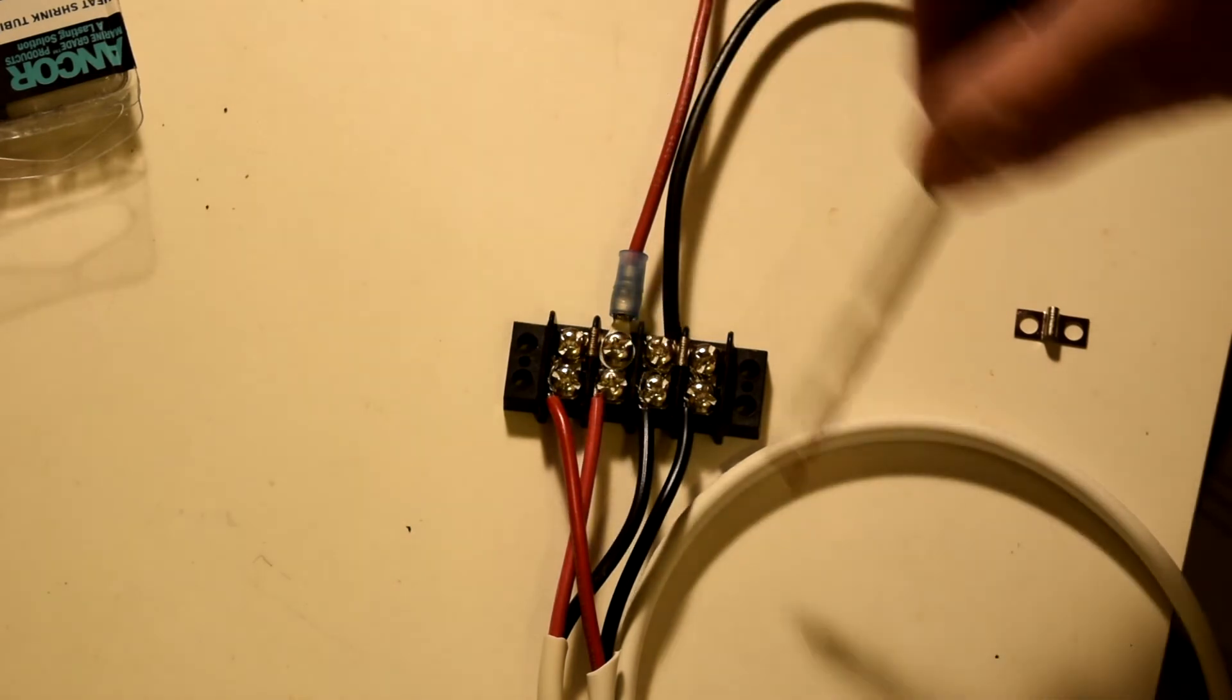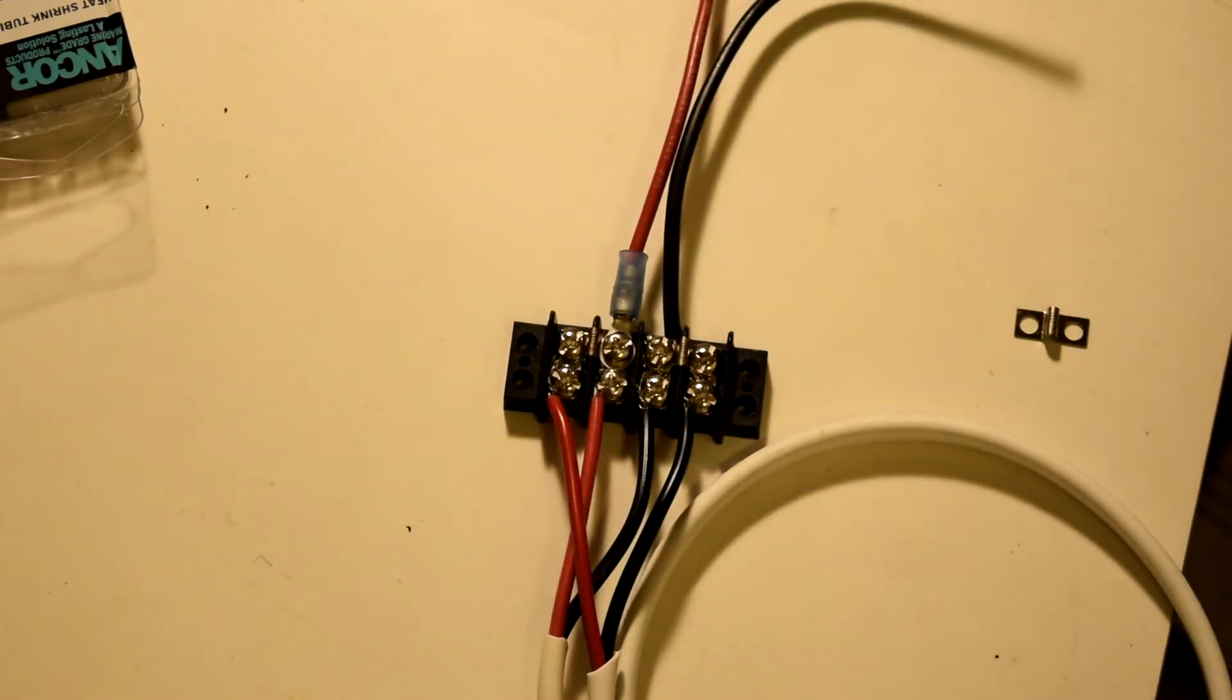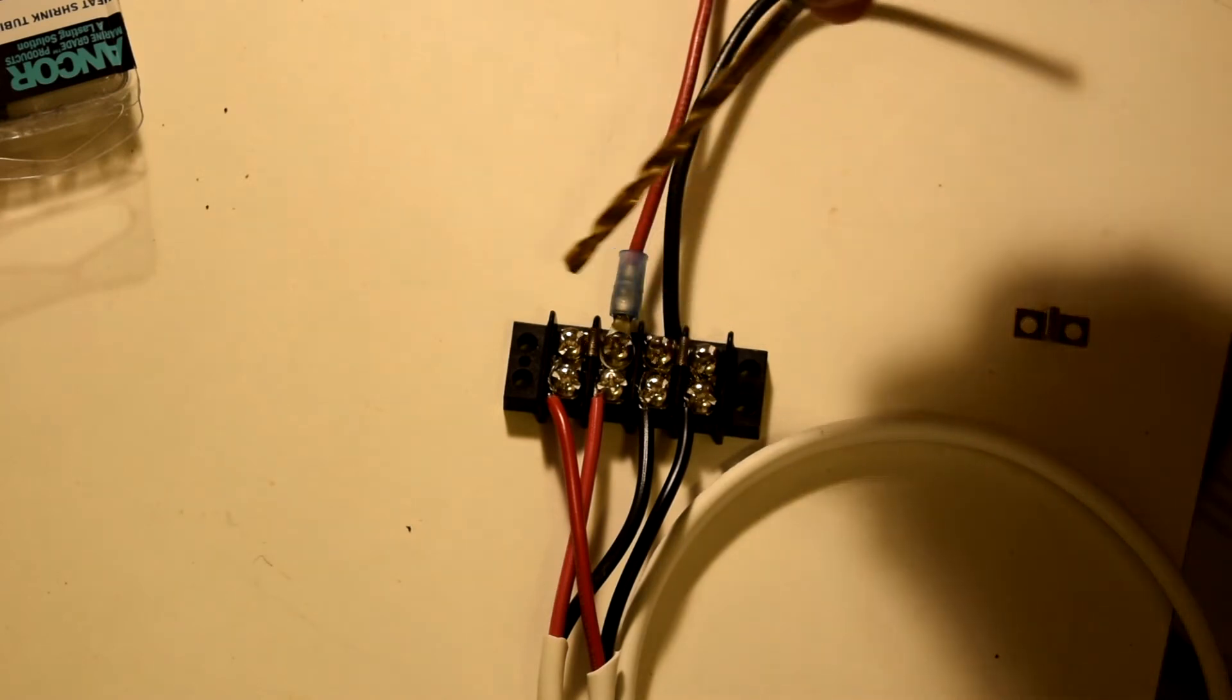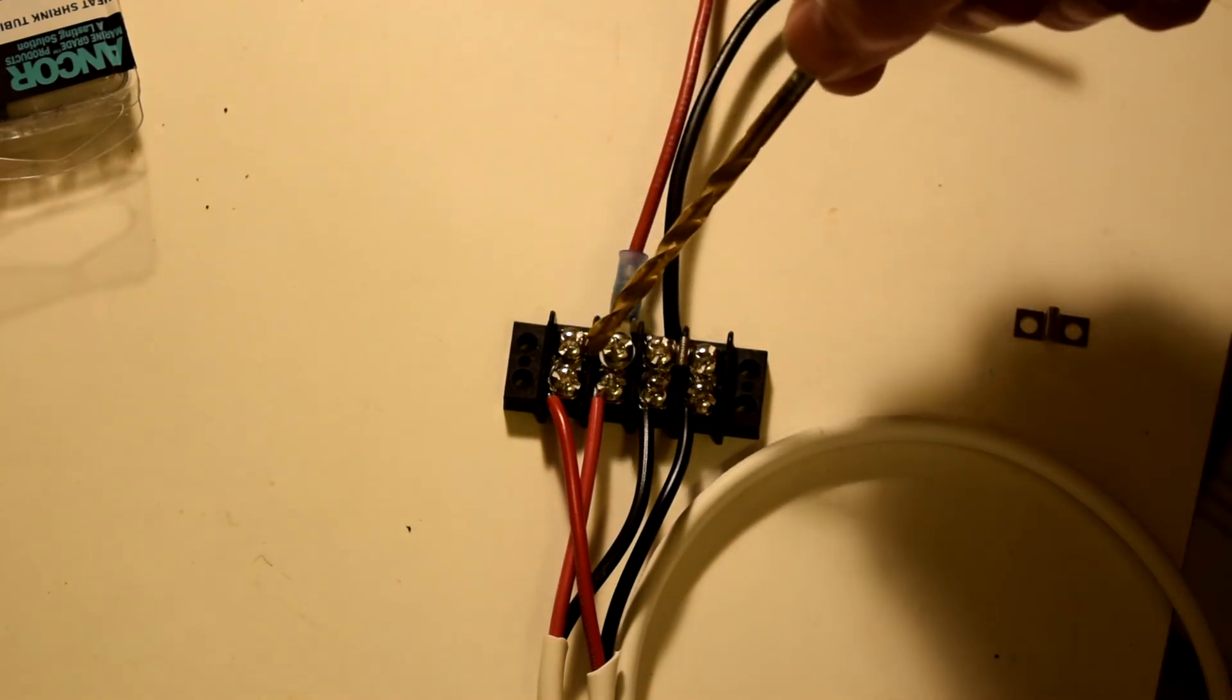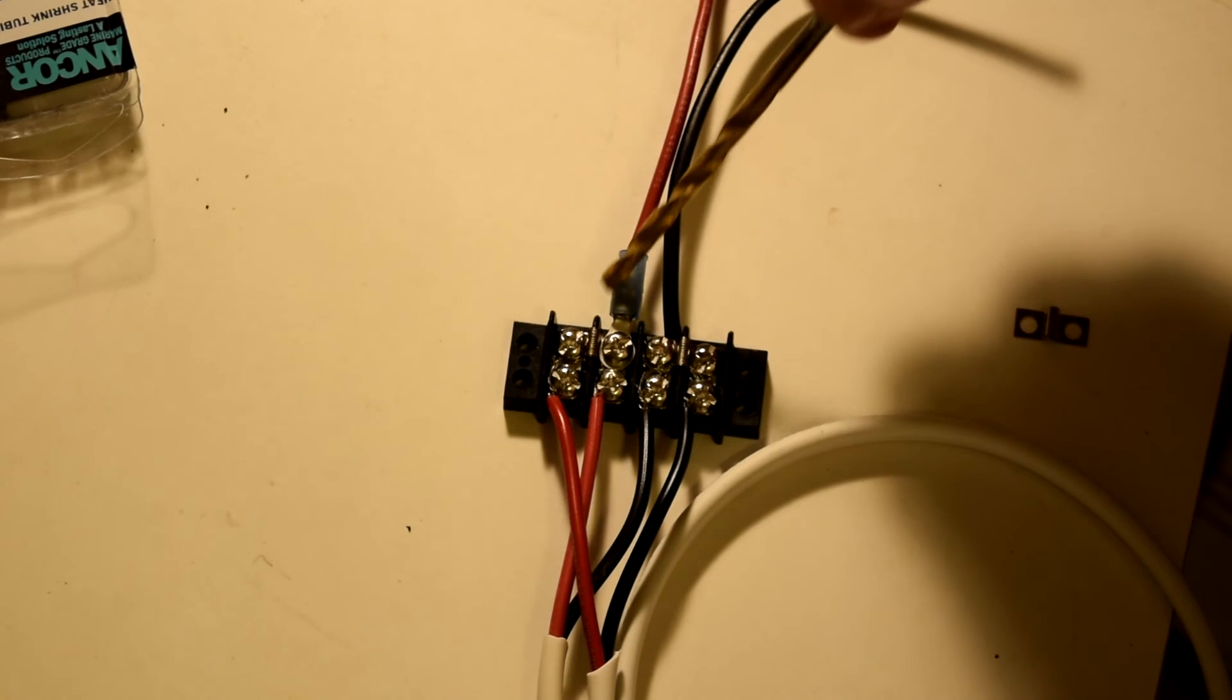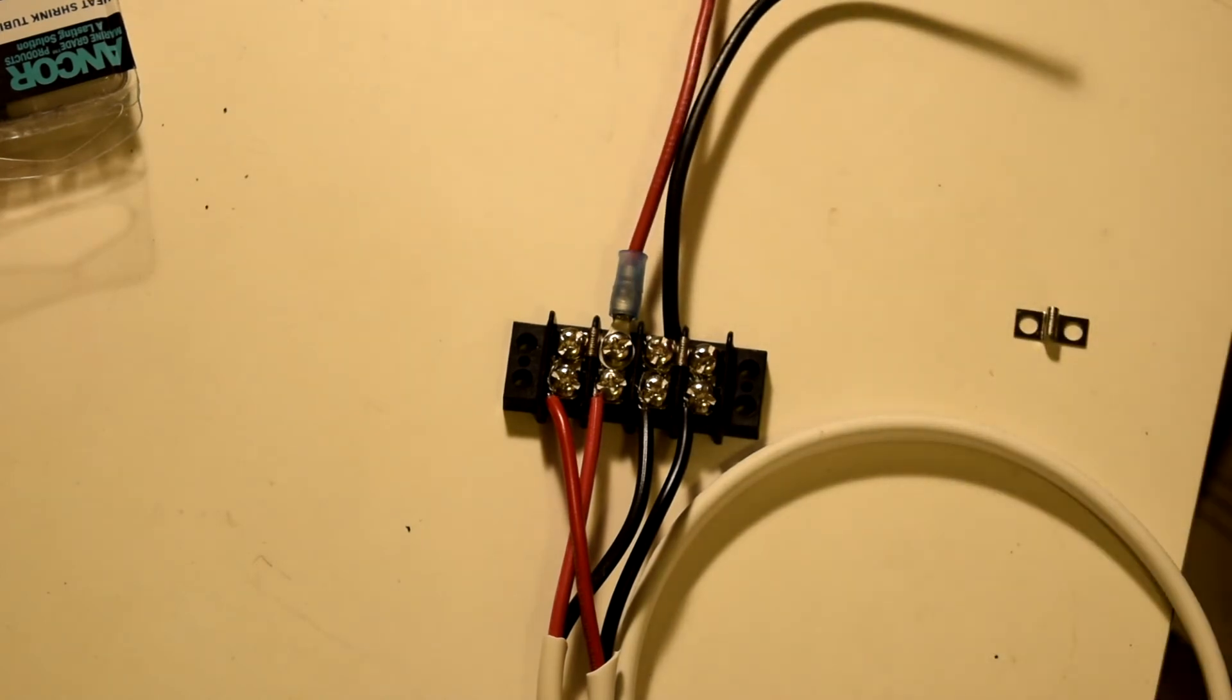Same thing happens for the positive. Wires from two solar panels coming in with a jumper here and the wire to the solar charge controller.